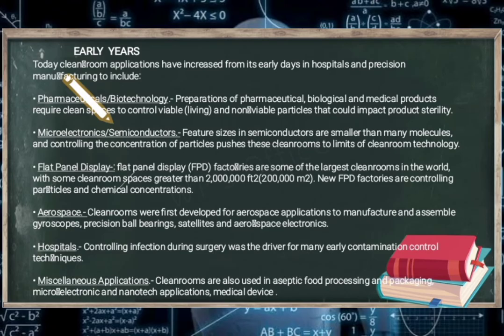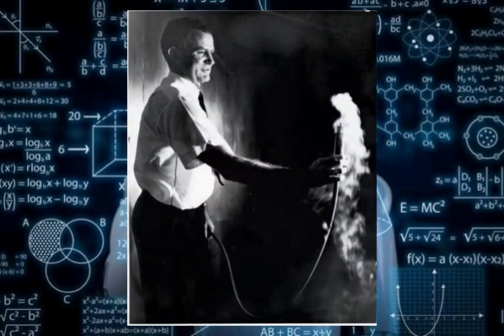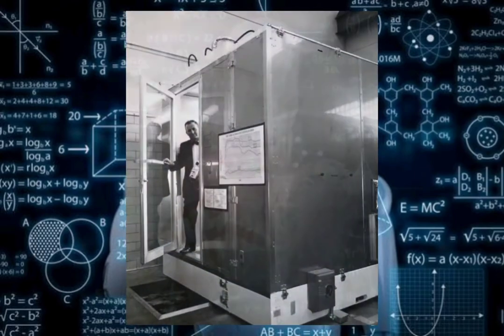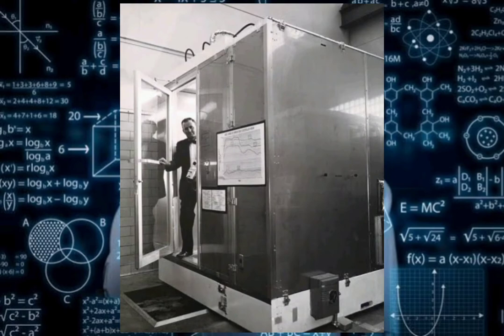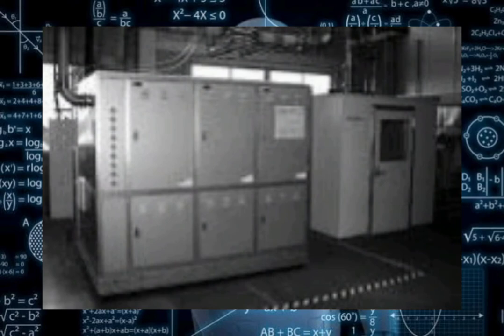Second, microelectronics and semiconductors. Feature size in semiconductors are smaller than many molecules, and controlling the concentration of particles pushes cleanrooms to limits of cleanroom technology. Third, flat panel displays. Flat panel display factories are some of the largest cleanrooms in the world, with some cleanroom spaces greater than 2 million square feet or 200,000 square meters. New FPD factories are controlling particles and chemical concentration.